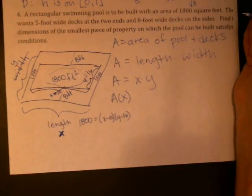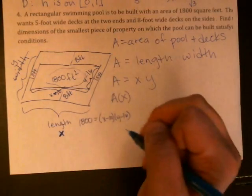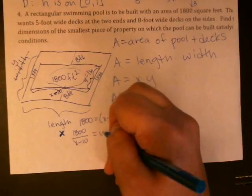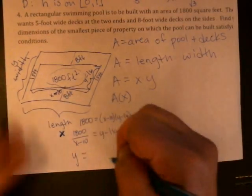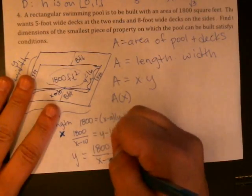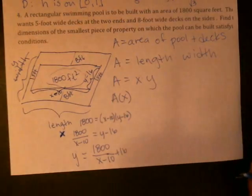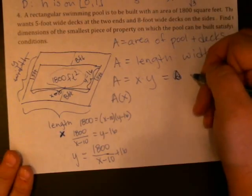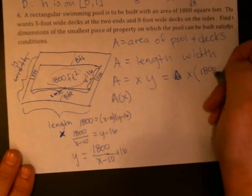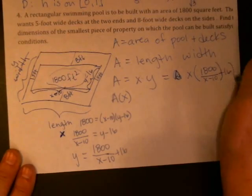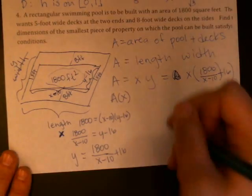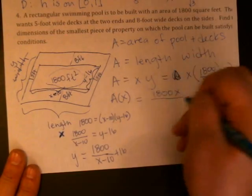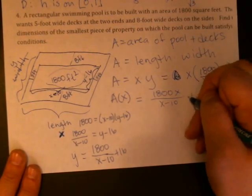So accounting for the fact that the decks aren't actually part of this, we have x minus 10 times y minus 16. And we're trying to eliminate a y. So we can say 1800 over x minus 10 is equal to y minus 16. So y is going to be 1800 over x minus 10 plus 16. And back in our formula, x times 1800 over x minus 10 plus 16. And I think I'd go ahead and distribute. I'm going to go for it. 1800x over x minus 10 plus 16x.